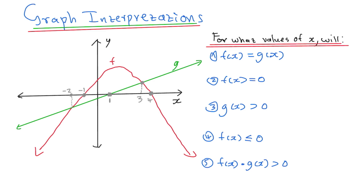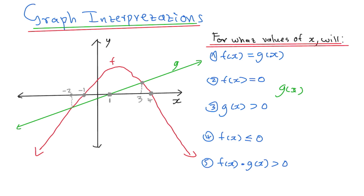So as you can see here, we have a graph of f. The graph of f is this one, and then the graph of g is this one.